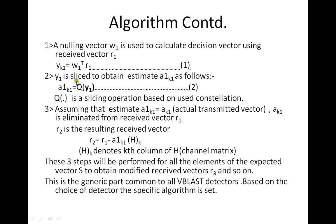The final aim is to calculate an estimate of the transmitted vector at the receiver. In step 1, interference nulling and cancellation are performed to calculate the decision statistic. In step 2, you obtain your estimate from the decision statistic by implementing a slicing operation over Y1. In step 3, you assume the estimate equals the transmitted vector and remove it from the received vector to obtain a modified received vector R2, where H denotes the k-th column of the channel matrix.